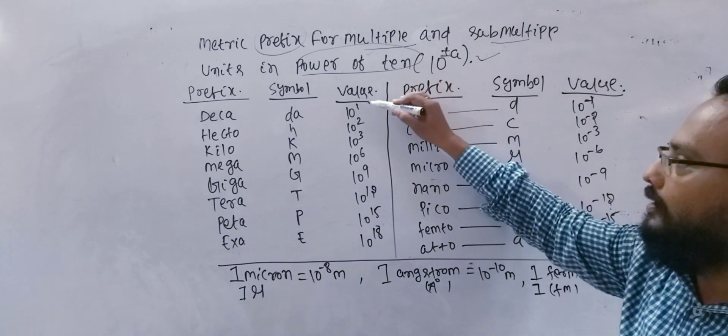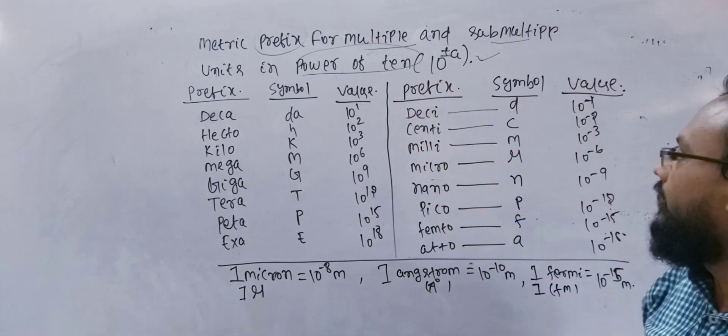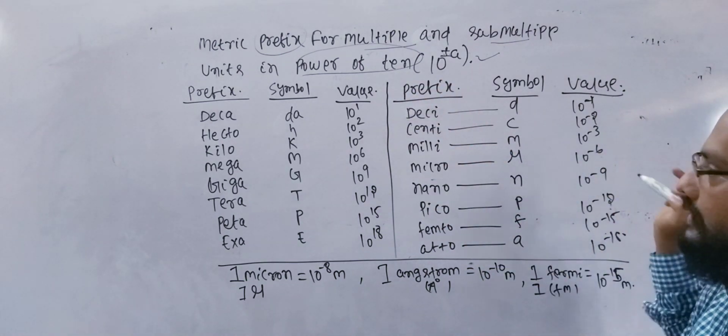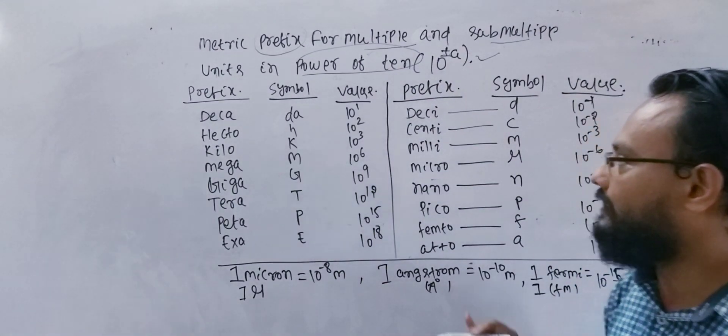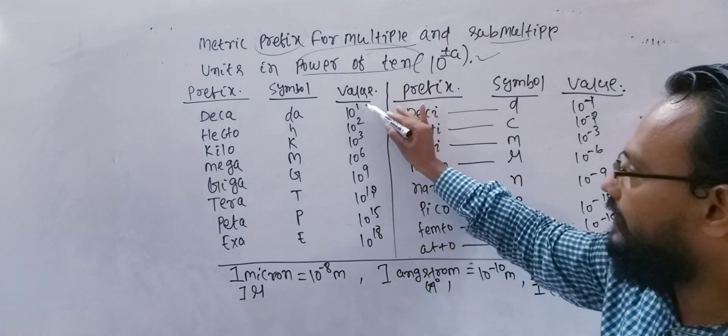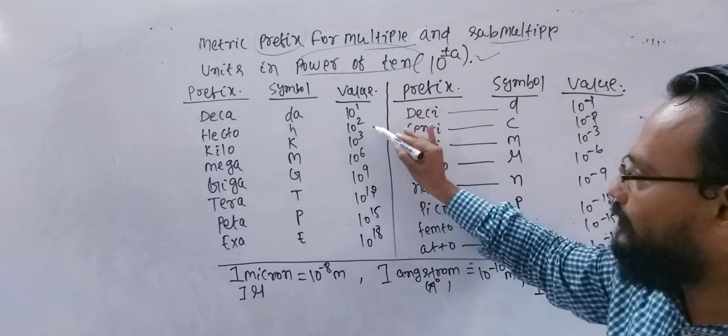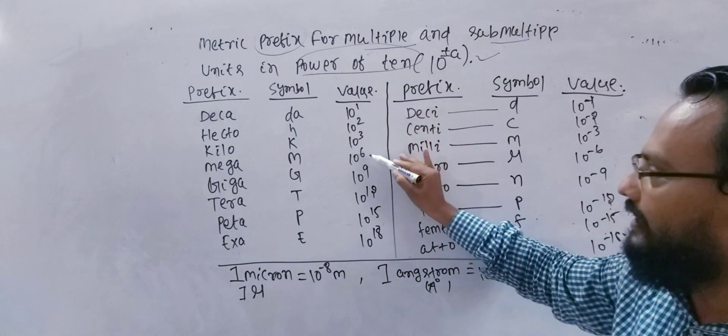Ten to the power outside is plus, outside is minus. Plus: ten to the power 1, 2, 3. It is called direct.